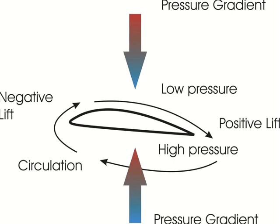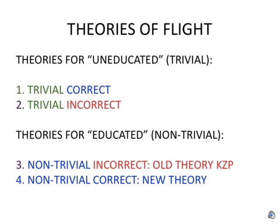But circulation theory is incorrect. We have now covered the spectrum of groups one to three of trivial or incorrect theories of flight, and what remains is group four: the new theory, as non-trivial and correct.